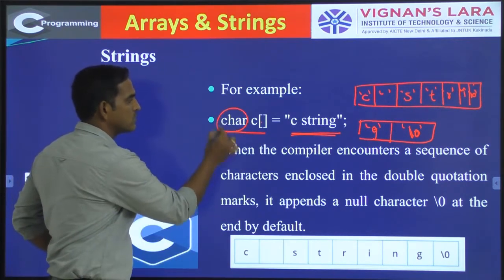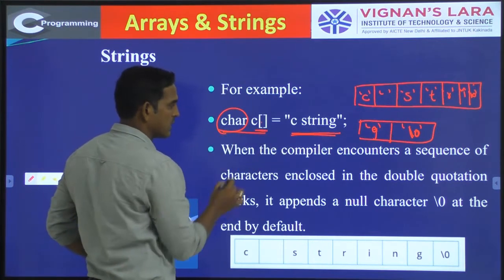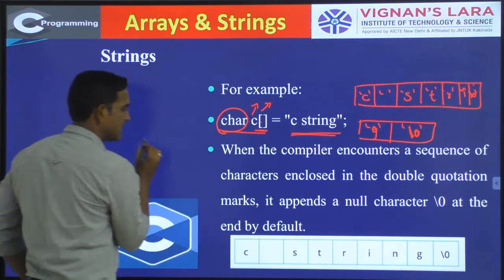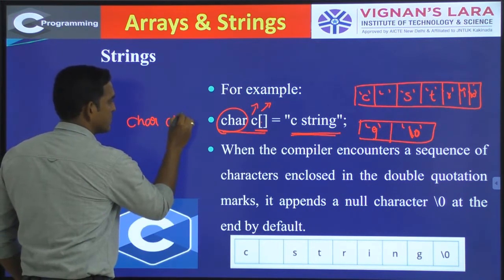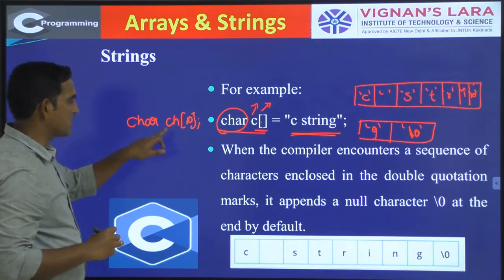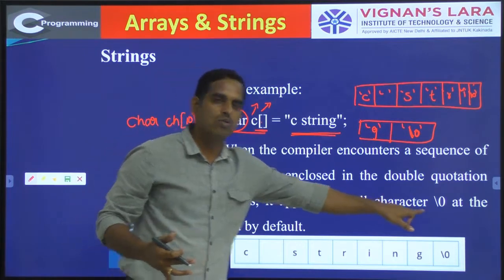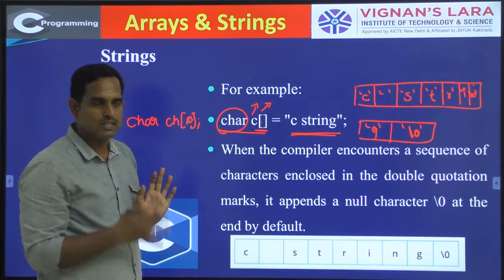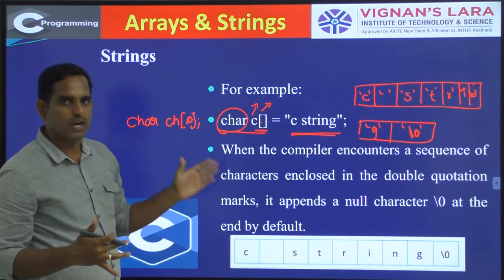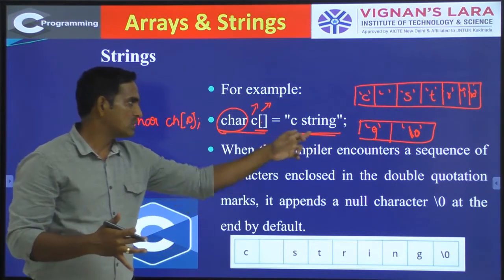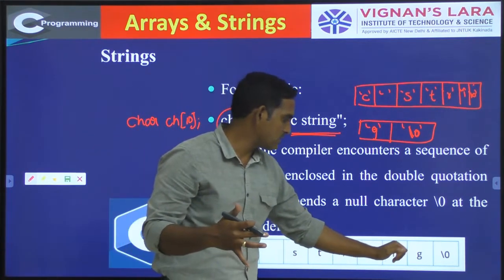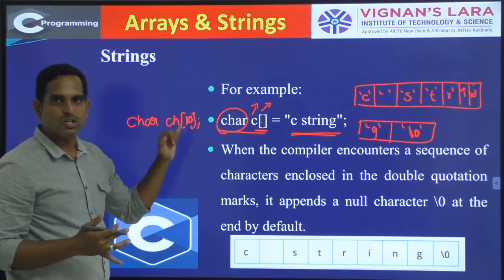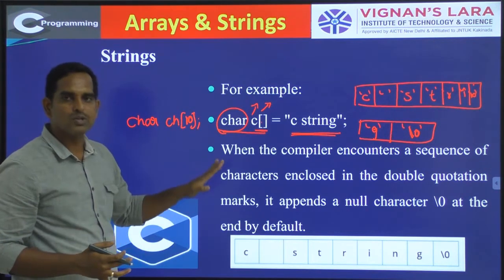To declare a string, use 'char', then specify the array name, then specify the size — the number of characters you are going to have in that string. Always make sure while declaring that you count the null symbol as well. If your string contains 100 characters, make sure the size of your string is 101 — you have to take the null character into account while declaring. So this particular example has 9 characters, so the size should be at least 9, accounting for null.